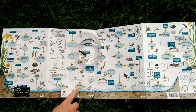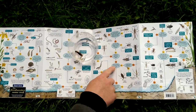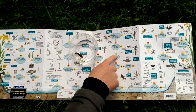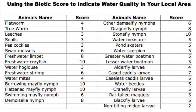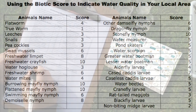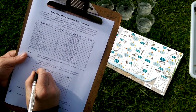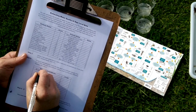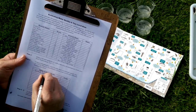Each species has a biotic score between 1 and 10. Invertebrates with a high score are sensitive to pollution, while pollution-tolerant invertebrates have a low score. Record each invertebrate identified, also noting their associated biotic score.